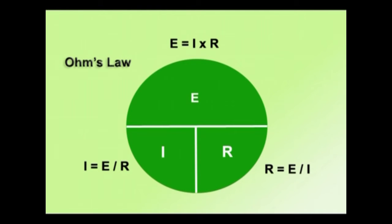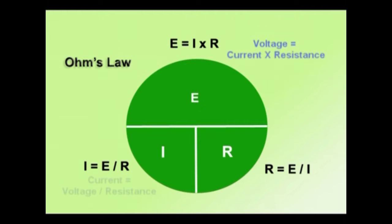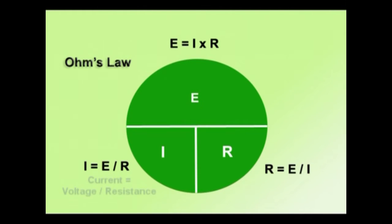Ohm's Law is often given in this circular chart, and it boils down to three formulas, which we generally memorize: R=E/I, I=E/R, E=I×R. If you just put that into your head, any time you have two things and are missing the other one, you can figure out the other one. On the top, the voltage is equal to the current times the resistance. Bottom left, the current is equal to the voltage divided by the resistance. And bottom right, resistance equals the voltage divided by current.